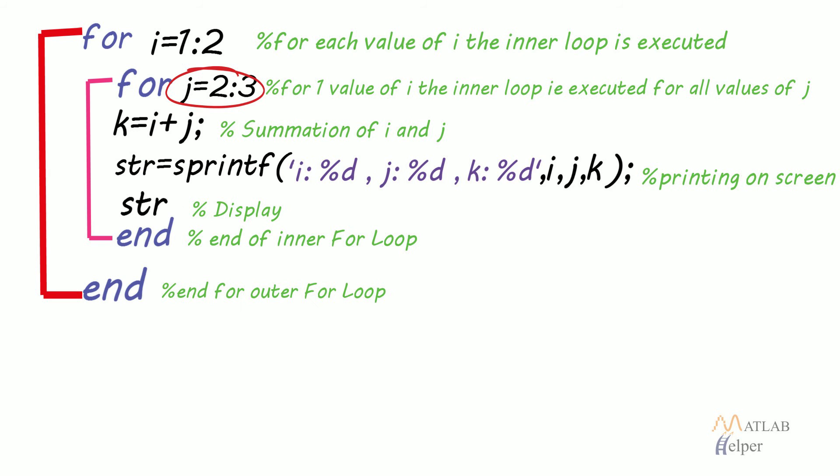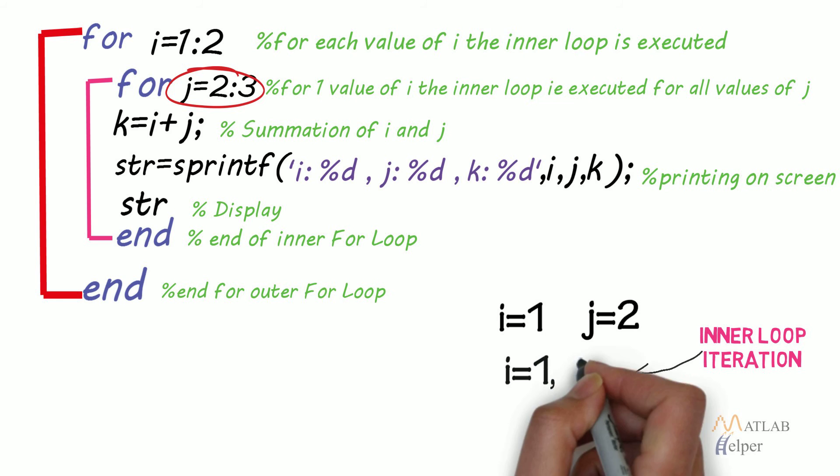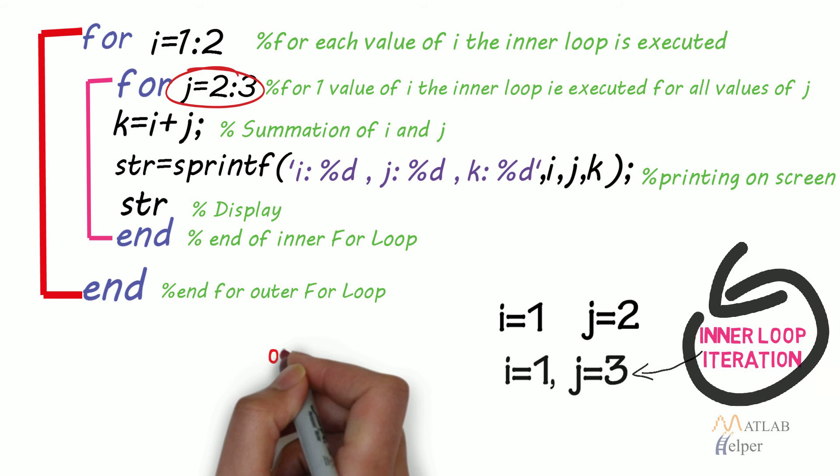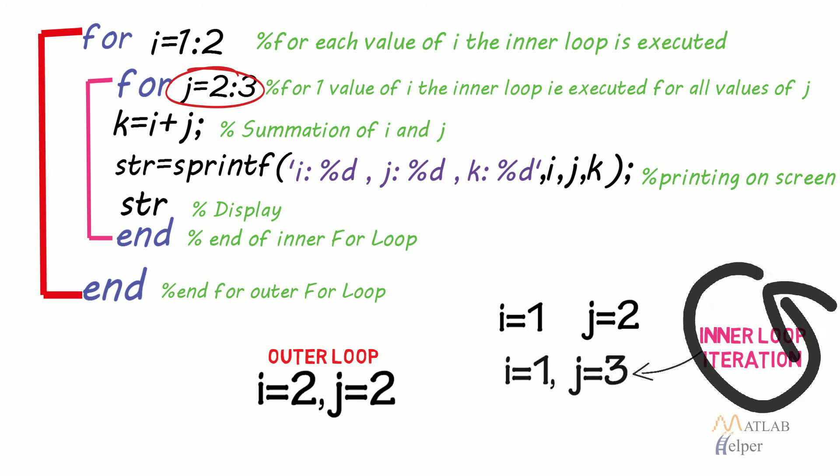In the example given, we can see that for i=1, first j would be 2, and then in the next iteration of the inner loop j would become 3. Thus i=1, j=3. Now after every iteration of the inner loop, the outer loop value gets incremented, that is i=2 and j will be 2, and the process repeats.